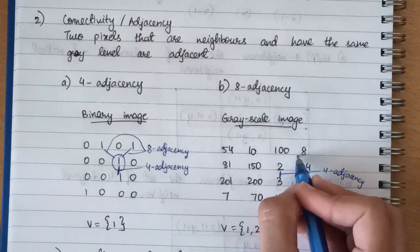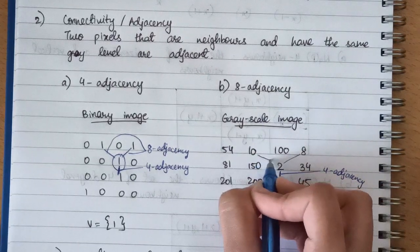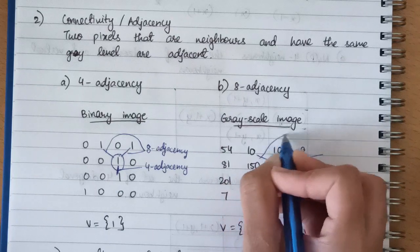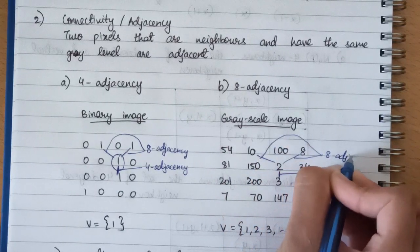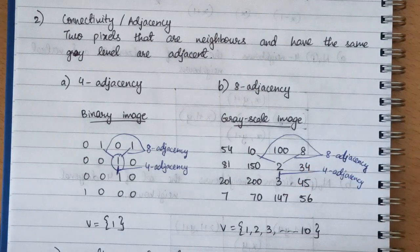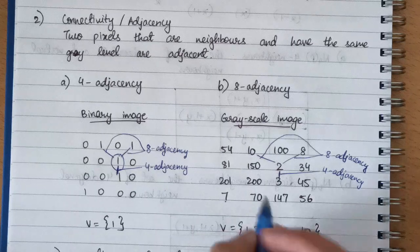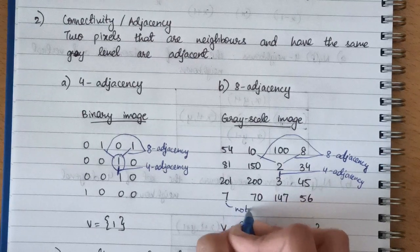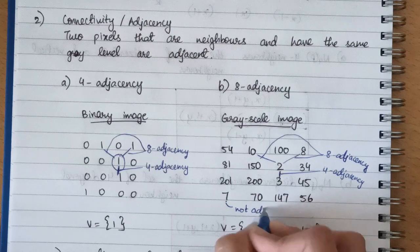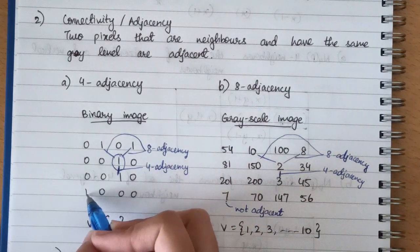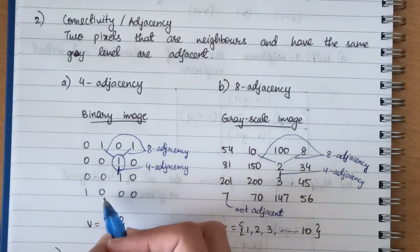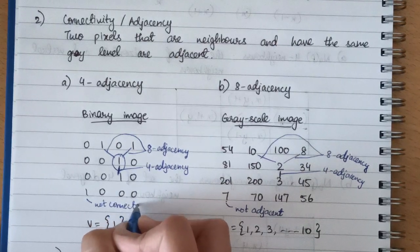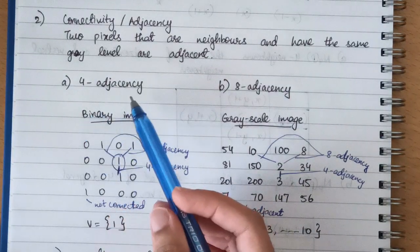Similarly, we can connect this element and this one because both are in the set — this is known as eight adjacency. If the neighboring elements are not in the set, they cannot be connected, so that element is not adjacent. Similarly, if all surrounding elements are zeros, they cannot be connected either.